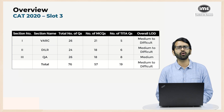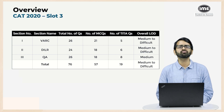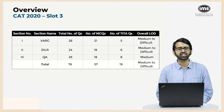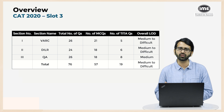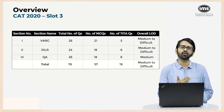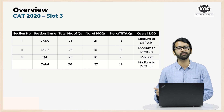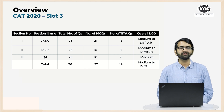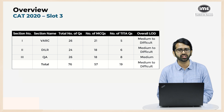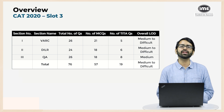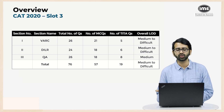Quantitative Aptitude had a total of 26 questions, out of which 18 were MCQs and 8 were TITA type. The quants section this year was the easier of the three sections and the overall level of difficulty was medium. In total we had 76 questions, 57 of which were MCQs, 19 were TITA, and the overall level of difficulty was medium to difficult.